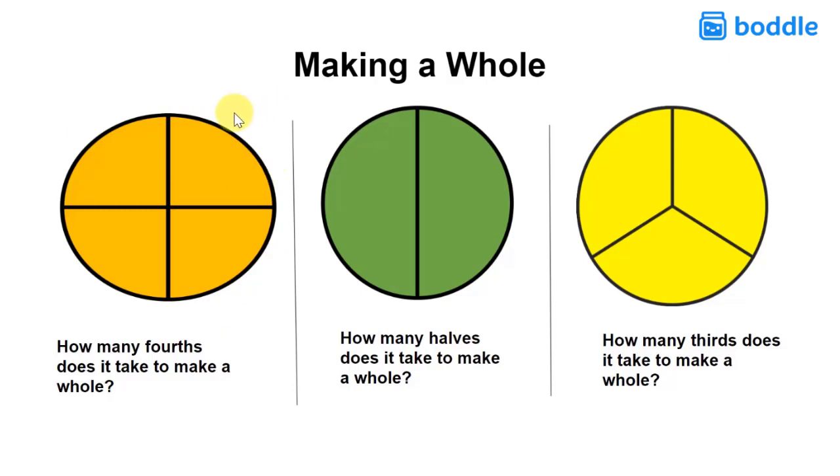So it takes one, two, three, four of them to give us one whole. So it takes four fourths to give us one whole, because four fourths equals one whole.